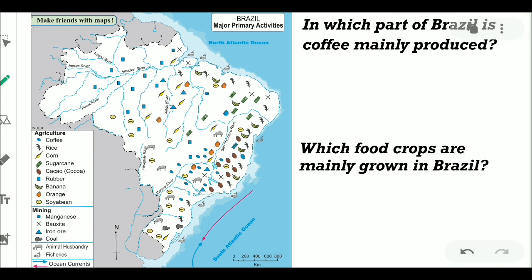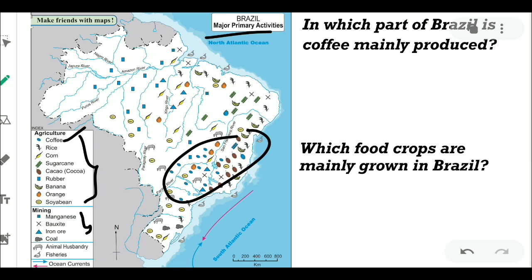Now let's move to the map of Brazil explaining major primary activities. It shows agriculture, the mining sector, animal husbandry, fisheries, and ocean currents. First question: in which part of Brazil is coffee mainly produced? The symbol of coffee appears most frequently in the south-east part of Brazil. So coffee is mainly produced in the south-eastern part of Brazil.